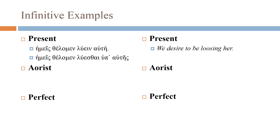Present middle-passive subjunctive infinitive: in the present, the middle and passive share the same endings. This is the passive form — we know that because it's followed by hupo ('by somebody'). So the meaning is: 'we desire to be continually loosed by her.' Once again, I'm using a continuous aspect.